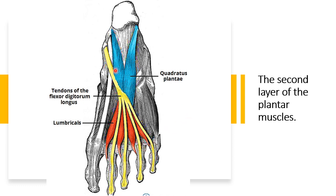The quadratus plantae is separated from the first layer of muscles by the lateral plantar vessels and nerves. Its attachment is from the middle and lateral plantar surface of the calcaneum, inserting within the tendon of flexor digitorum longus. It helps the flexor digitorum longus in flexing the lateral four digits. Nerve supply is the lateral plantar nerve.